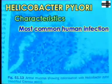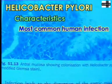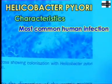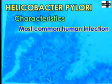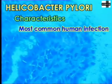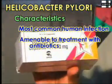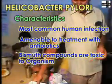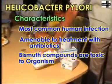Infection with H. pylori is the most common human infection and in some populations it may be as high as 80-90%. The possibility of infection is inversely proportional to socio-economic group. Helicobacter infection is amenable to treatment with antibiotics, and in addition, bismuth compounds are toxic to the organism.